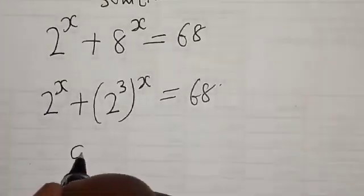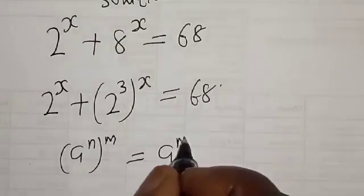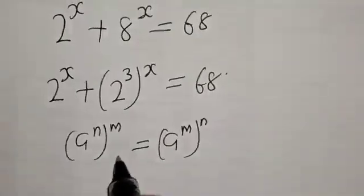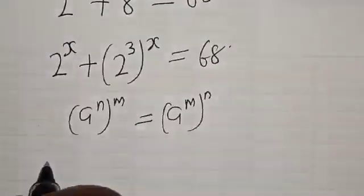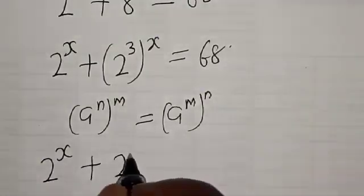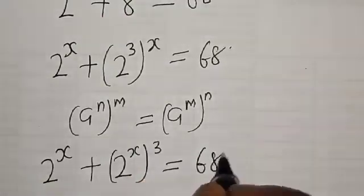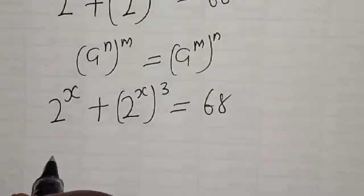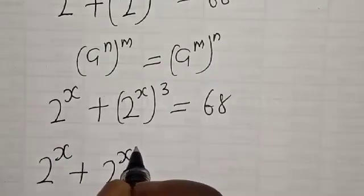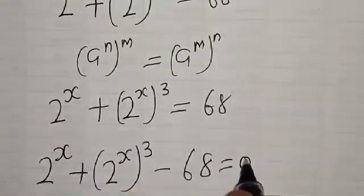Now remember, if you have a raised to the power n raised to the power m, that is the same thing as a raised to the power m raised to the power n. Then this 2 raised to the power 3 will now be rewritten in another form. We have 2 raised to the power x plus 2 raised to the power x, raised to the power 3, is equal to 68. Then we have 2 raised to the power x plus 2 raised to the power x, raised to the power 3, minus 68 is equal to 0.